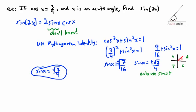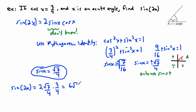Now we have everything we need. Sine of 2x equals two sine x cos x. Substituting in, that's two times root seven over four, times three over four. Multiplying the tops: two times three is six, giving us six root seven. The bottom: four times four is sixteen. Since six and sixteen both divide by two, we get three root seven over eight.